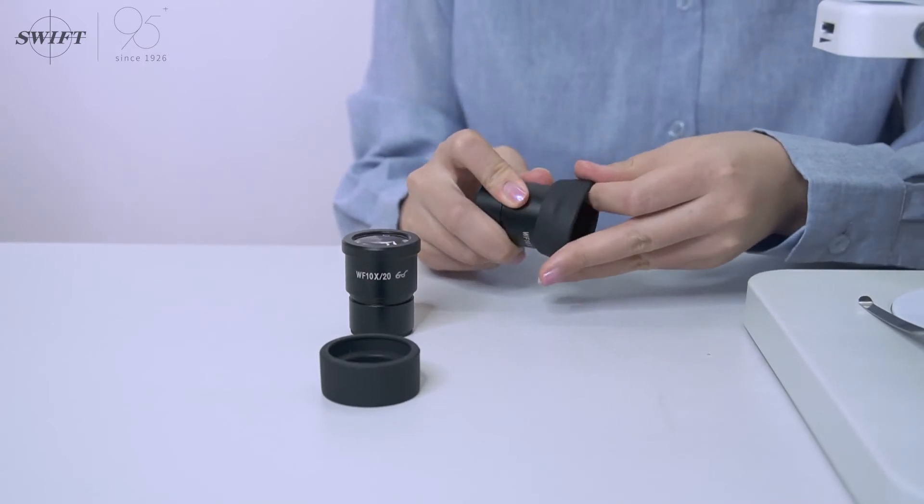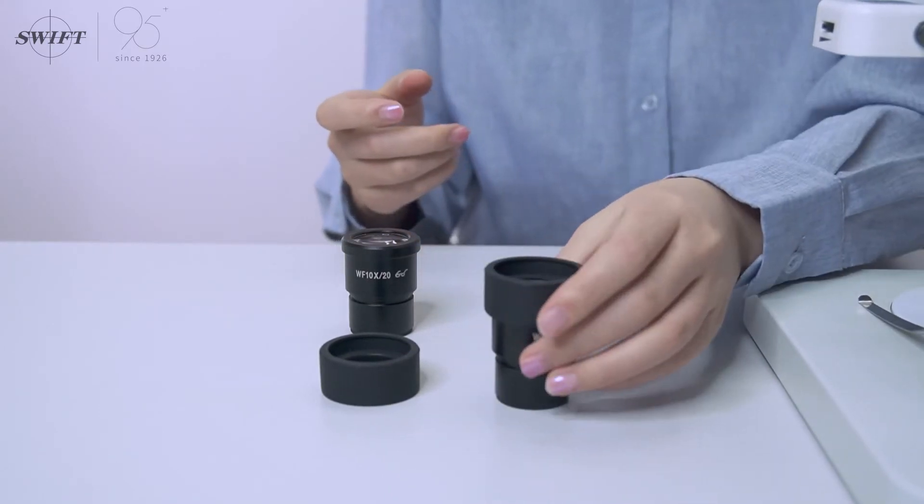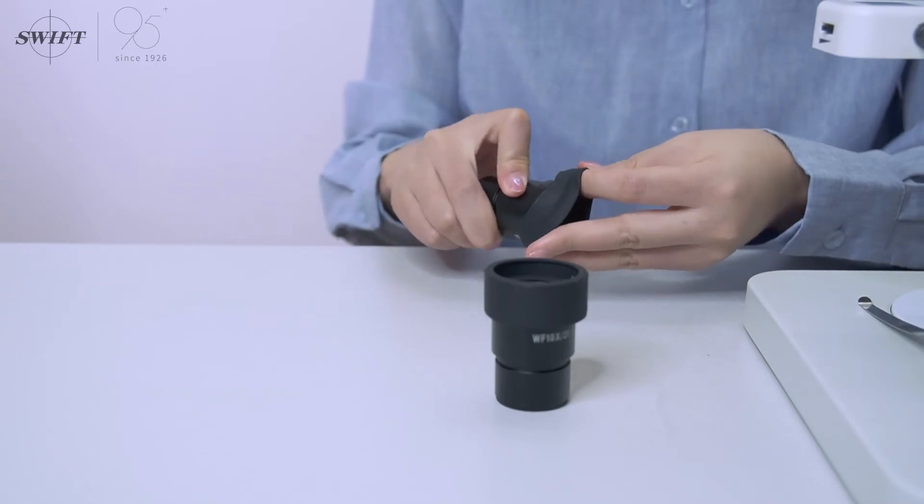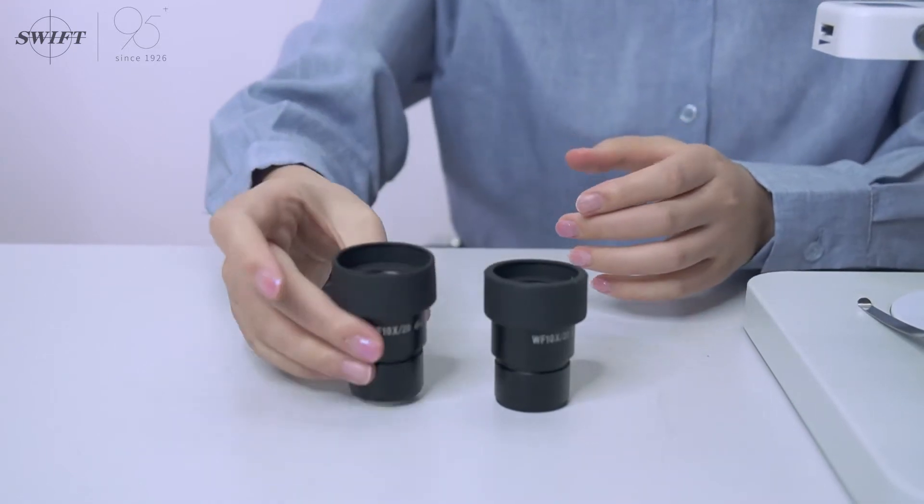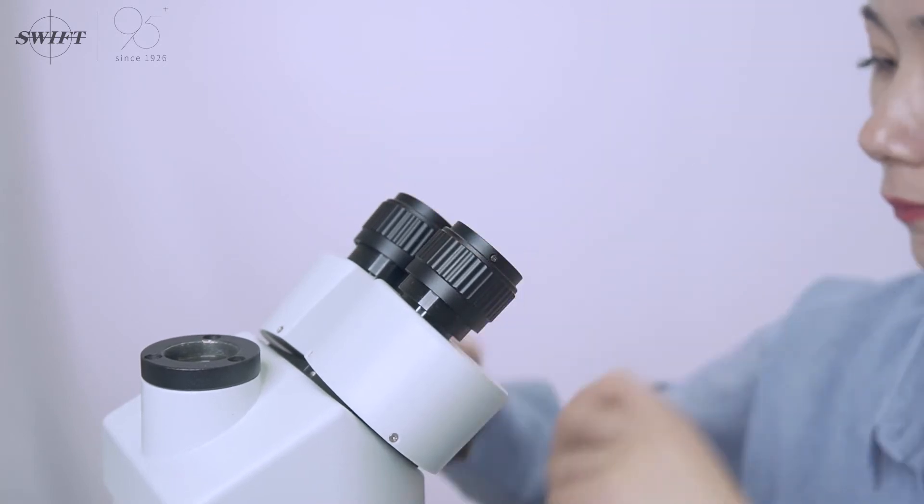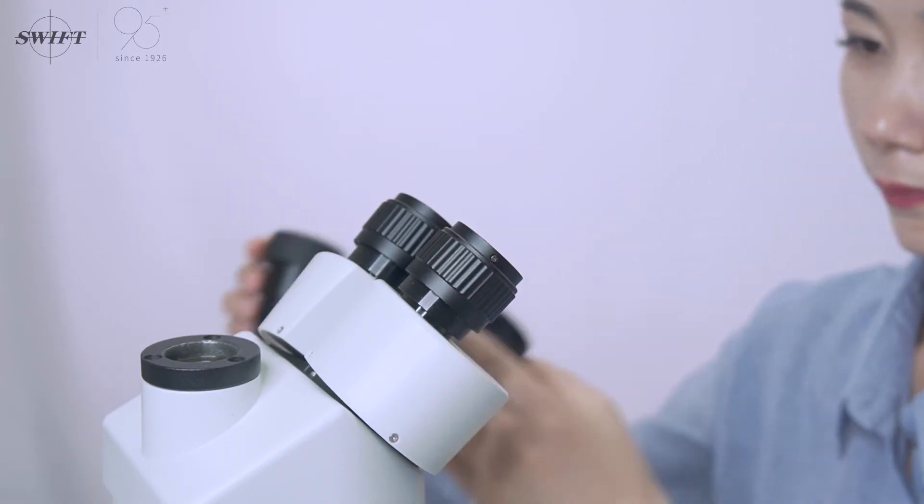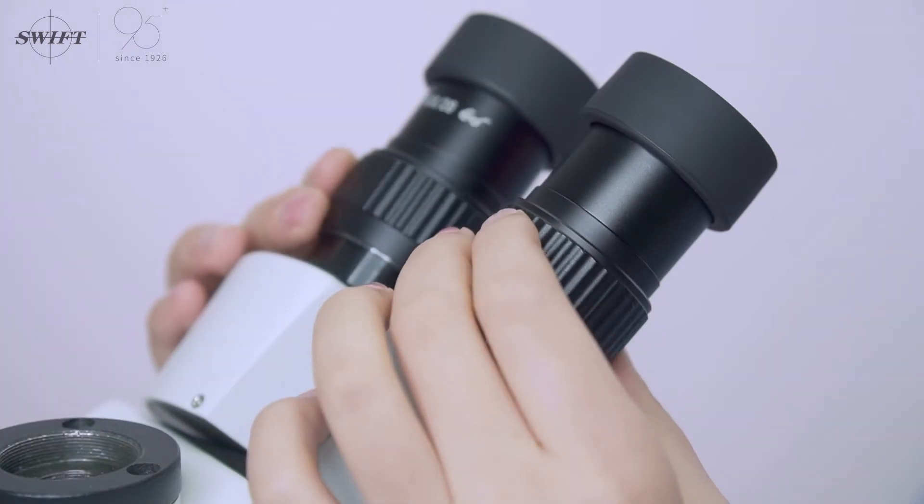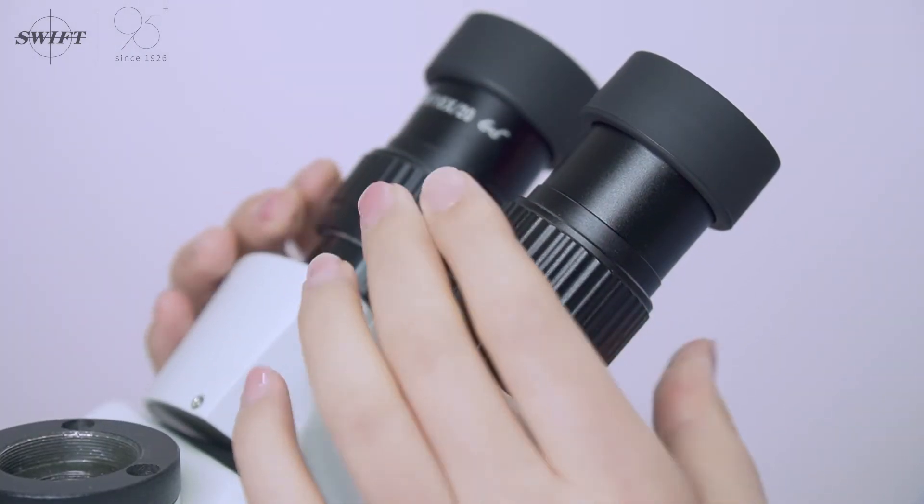Put the eye shield on the eyepiece. Loosen the screw to remove the dust cover on the eyepiece tube and put the 10X eyepiece into the tube. Place the diopter circle at the starting line position.